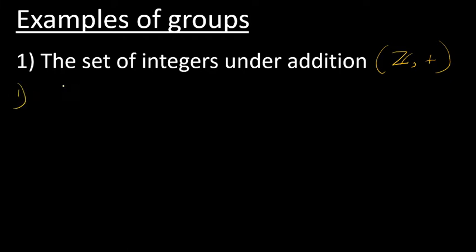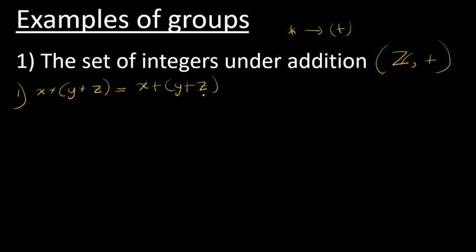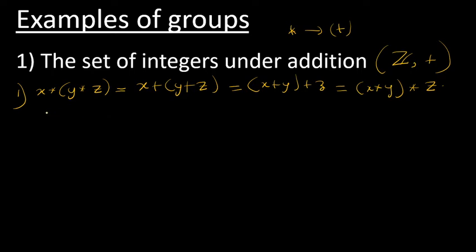First property is associativity. Consider x star (y star z). Since the star operation is usual addition, this can be written as x plus (y plus z). Since these three are integers, you can add them in this manner, and this equals (x plus y) plus z, which is (x star y) star z. Therefore the set of integers is associative.